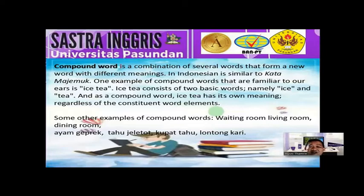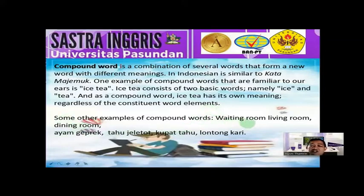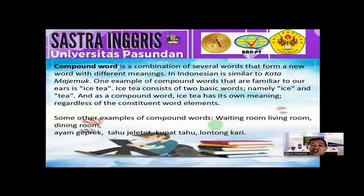Ice tea refers to a cold soft drink with a tea flavor. Regardless of the constituent word elements, the meaning refers to the elements as a combined whole. Most compound words are combinations of nouns, although some combine a noun with an adjective. A characteristic example in English is 'waiting room' — not a room that is waiting, but the room for people who want to sit down and wait for a flight schedule or someone.